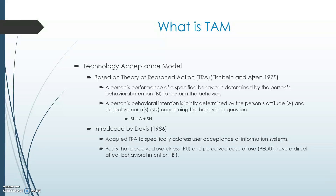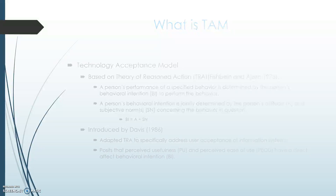These theories indicate that an individual's intention to perform a given behavior is the immediate causal determinant of their overt performance of that behavior, and that their intention is jointly determined by their attitude toward performing the behavior and the perceived social influence of those that are important to them. In summary, an individual will perform an action based on their belief that the action will bring positive consequences or be viewed positively by those important to them. Actions may also be perceived to improve one's social status.